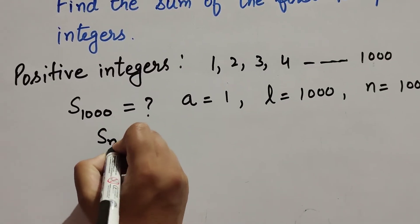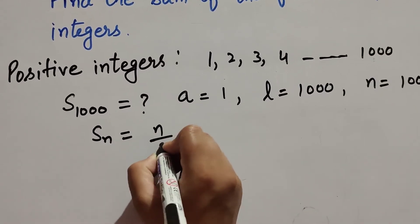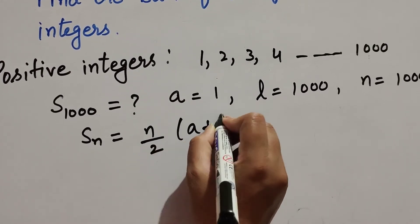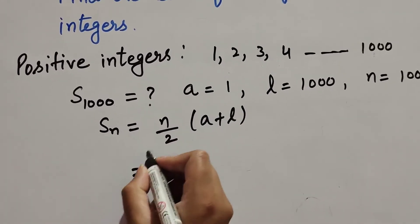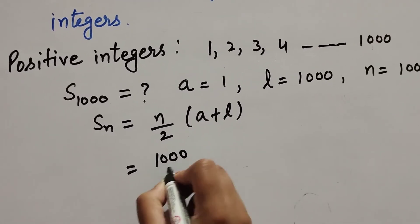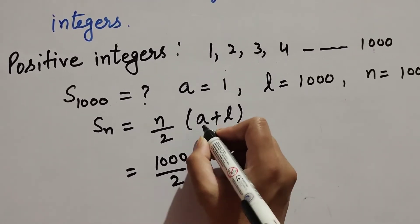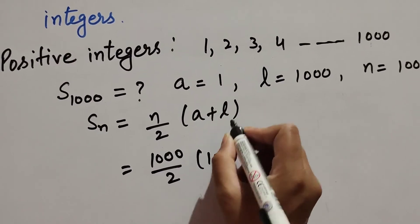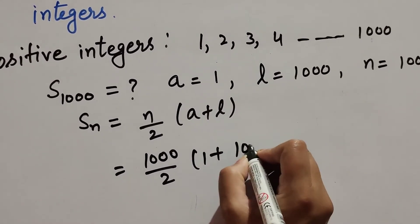So we know the formula to find sum of n number of terms. It is equal to n over 2, a plus l. So n is equal to thousand over 2, a is first term, it is 1 plus l, l is last term, it is equal to thousand.